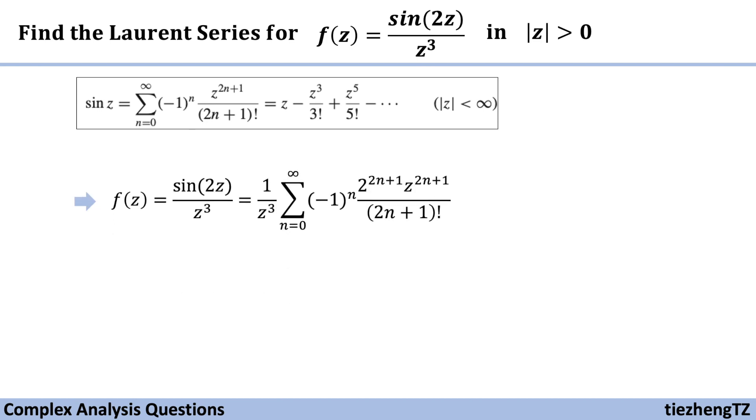So next, we just substitute. But remember, we are substituting 2z, not just z. So now we have 1 over z to the cube times the sum minus 1 to the power of n and then 2 to the power of 2n plus 1 times z to the power of 2n plus 1 over 2n plus 1 factorial.